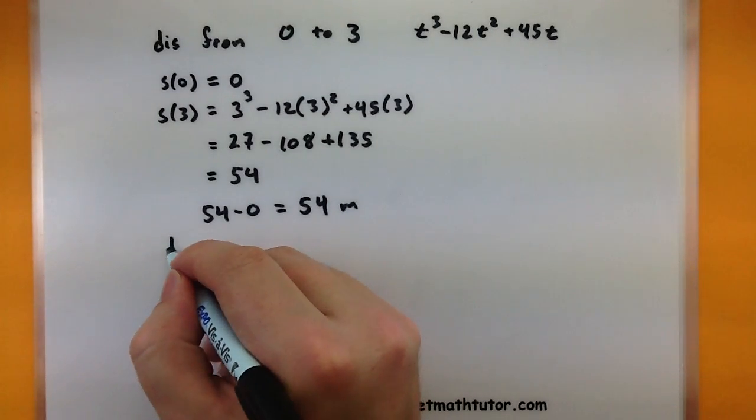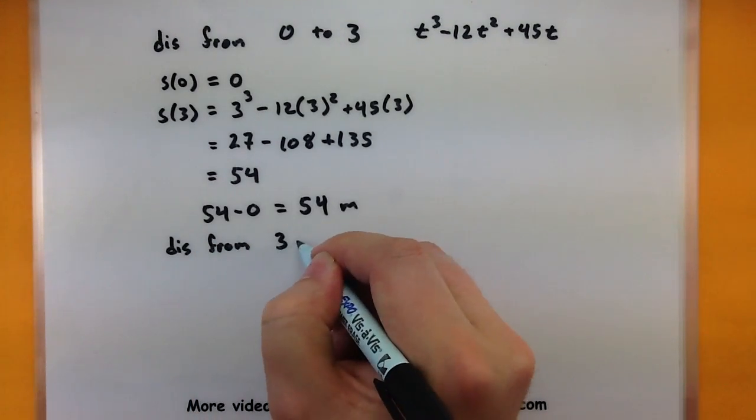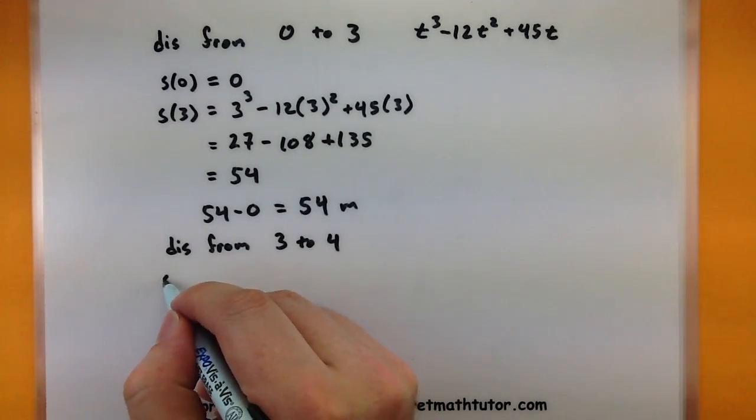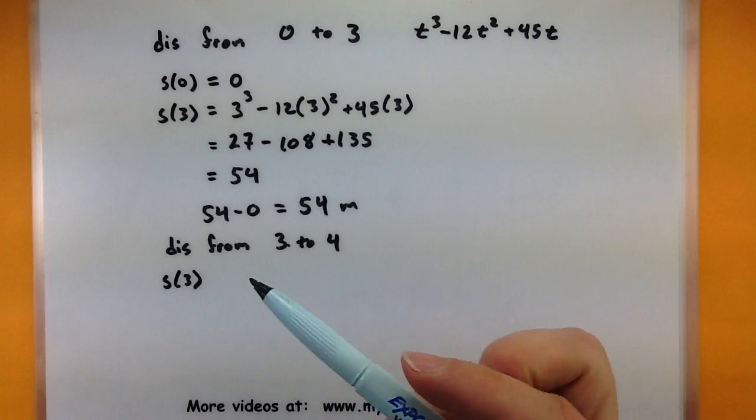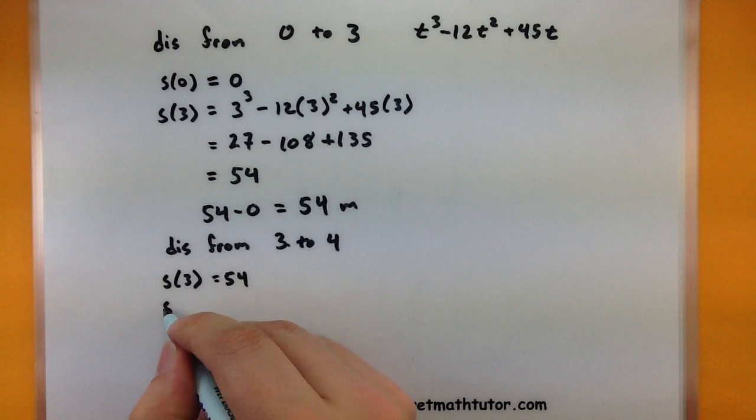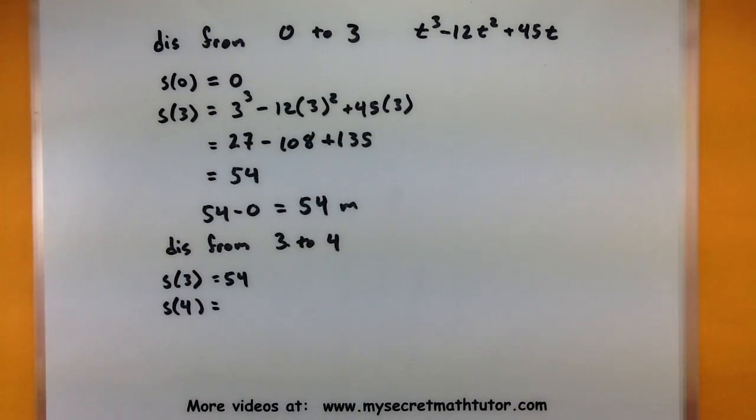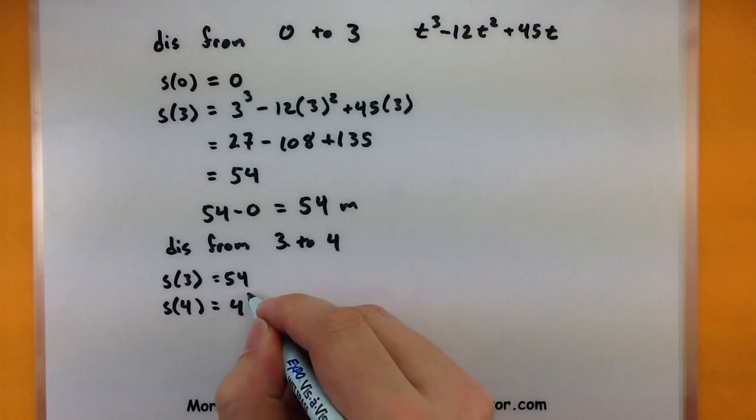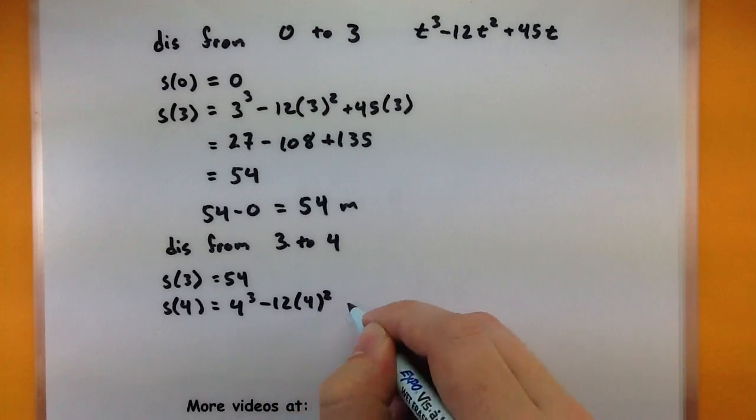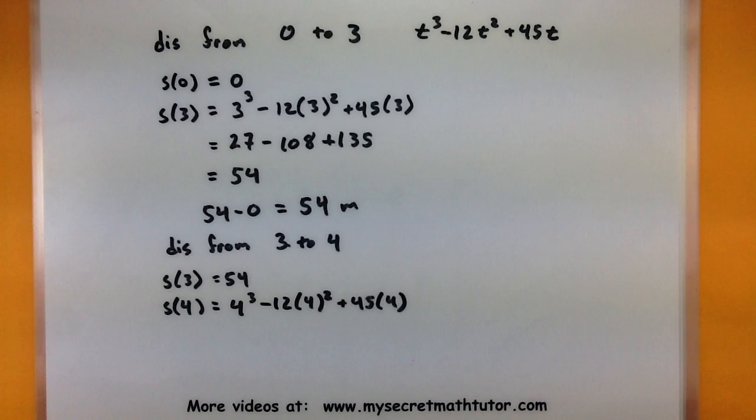Alright, now let's go ahead and do the distance from 3 to 4. So we'd want to look at what is the distance at 3, and fortunately we've already done that up here, so that was 54. And we'll also look at the position at 4. So this one does require a little bit of work. Let's go ahead and plug in that 4 and see what we get. So 4³ - 12(4²) + 45(4).